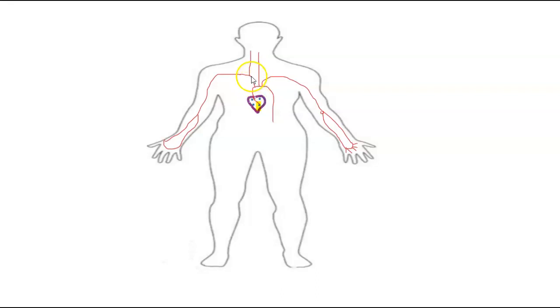So this is the right brachiocephalic artery. Now after this bifurcation, this becomes the right subclavian artery, axillary artery, brachial artery, radial and ulnar arteries.